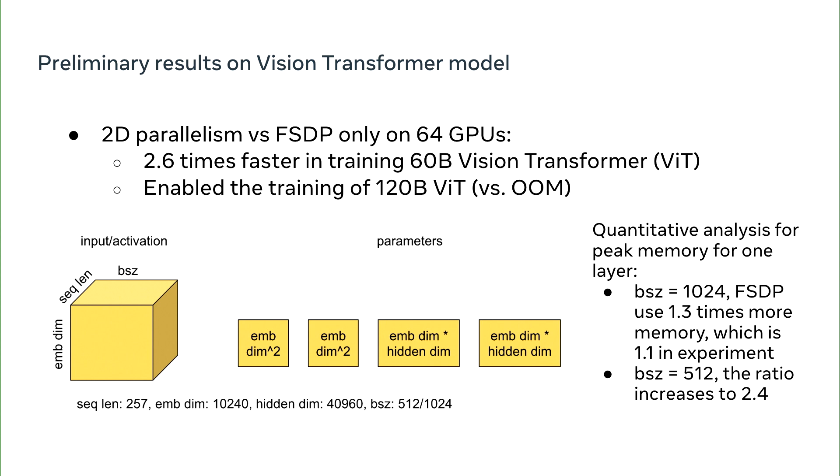Here, we can do some back of the envelope calculations. If we simplify each layer of transformer encoder as one input tensor and four linears, we can calculate the peak memory ratio for 2D parallelism and FSDP-only scenarios. The result shows that when the batch size is 1024, FSDP is using 1.3 times more peak memory than 2D parallelism. And upon measurement, this ratio is 1.1.